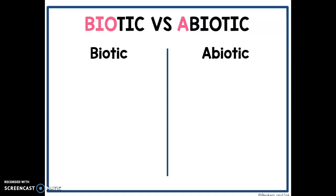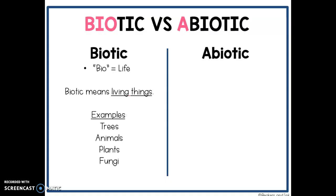Let's take a look at a chart and compare biotic versus abiotic, because when you break it down like this it'll be very easy to understand. If we remember that bio means life, biotic refers to our living things. When we're talking about these living things, we're talking about things like our trees, vegetation, animals, plants, and fungi.